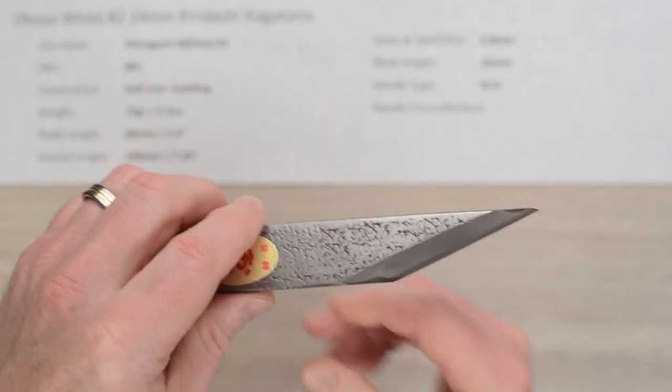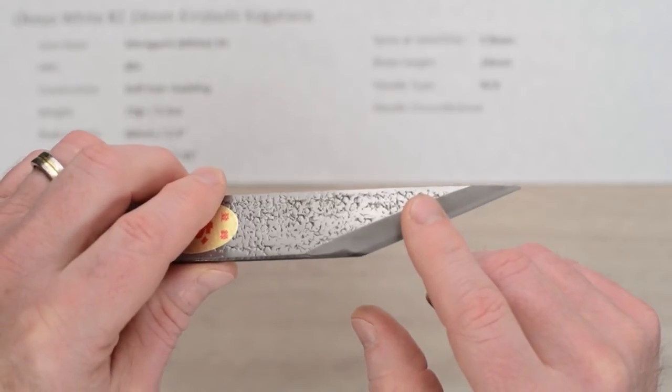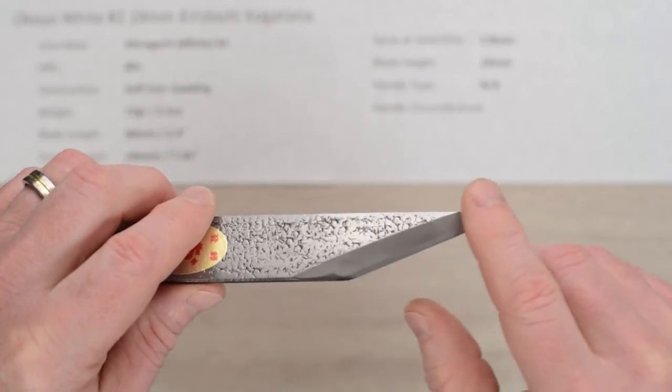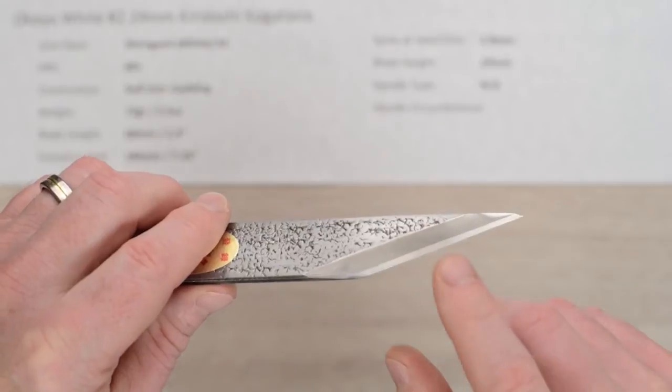The front side of the blade has a true shinogi and blade road, and you can see the two layers right there.